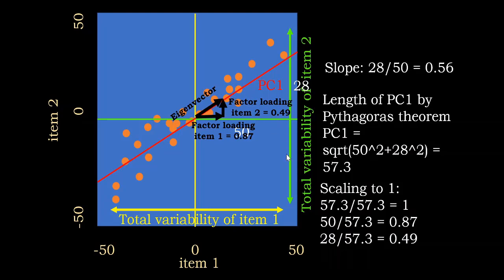The factor loading is a sort of correlation between the variable and the principal component. If we treat the principal component as a new variable with values for each observation and compute the correlation between any item and the principal component, we get a result similar to the factor loading: 0.49 for item two and 0.87 for item one. So item one is strongly correlated with principal component one, while item two has a more moderate but still decent correlation.